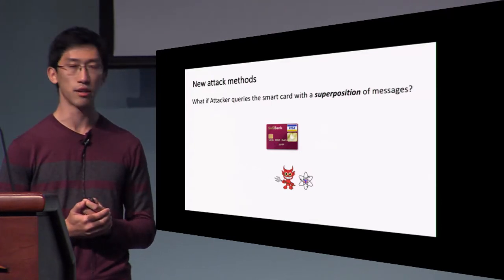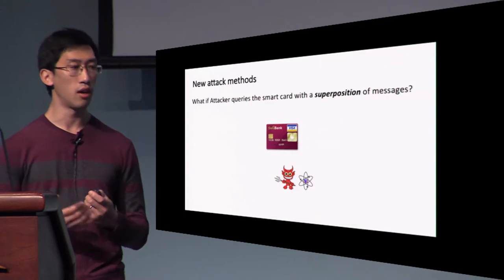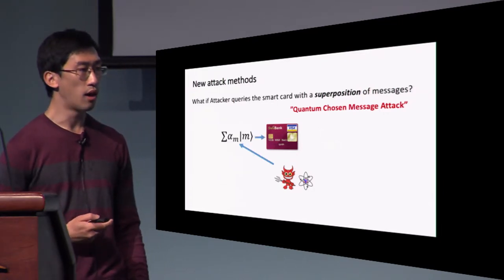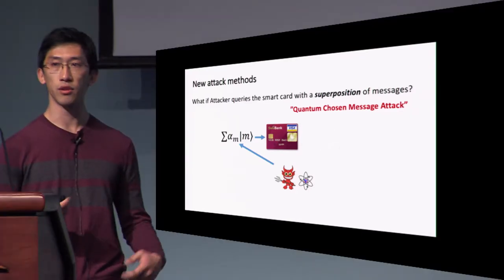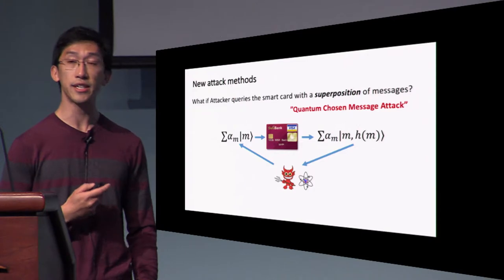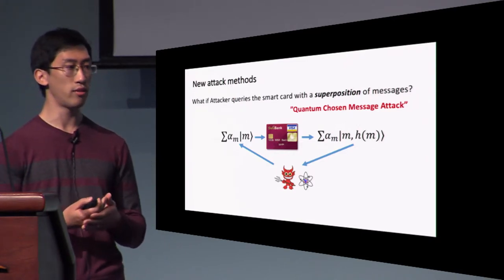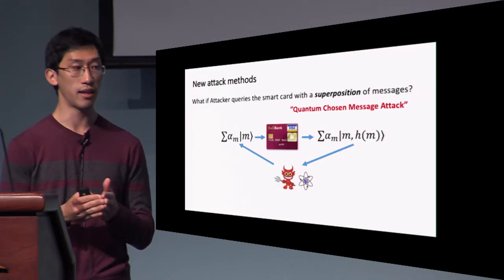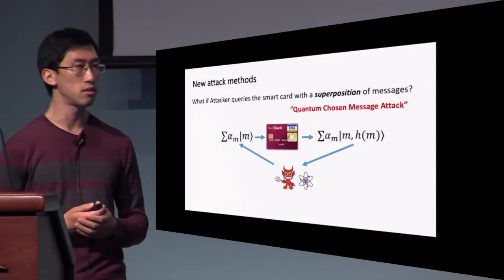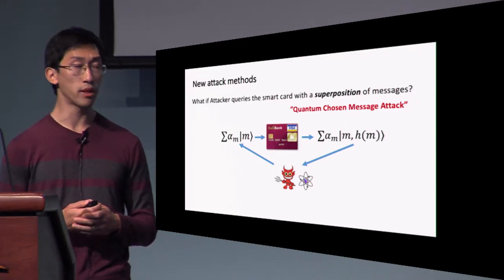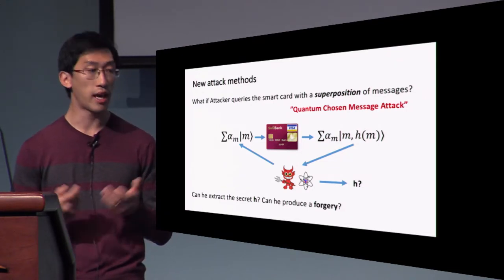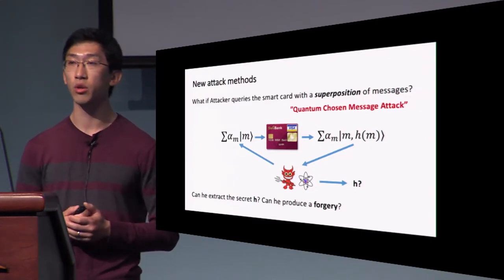What if the attacker queries your bank card with a superposition of messages? We call this a quantum chosen message attack. The adversary prepares a superposition of classical messages and feeds it into the smart card, which authenticates it in superposition—possibly an exponential number of messages authenticated simultaneously. The question is: what can the adversary do with this quantum state? Maybe it could perform some complicated quantum computation to extract the secret key H. Can it produce a forgery from just this one quantum superposition query?